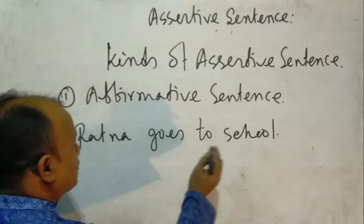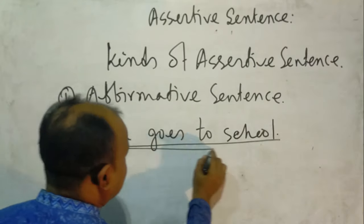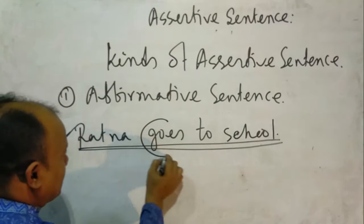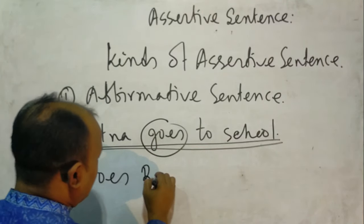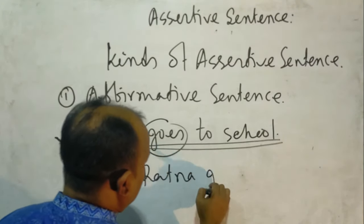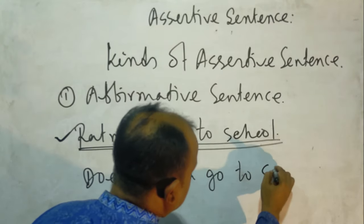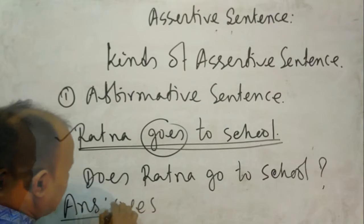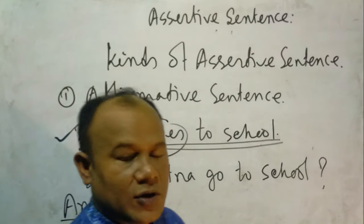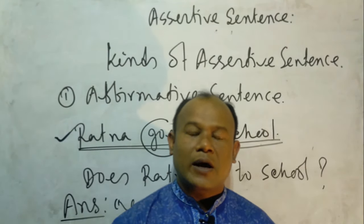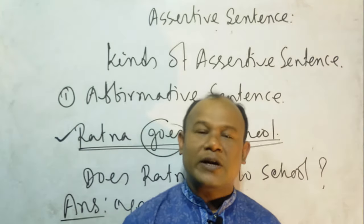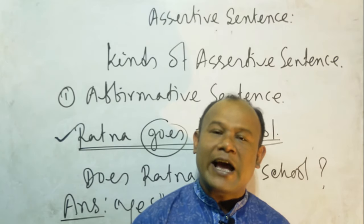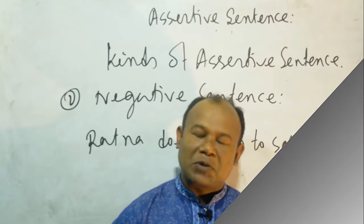Take the sentence: Ratna goes to school. If we ask a question centralizing this sentence — does Ratna go to school? — the answer will be yes. So, centralizing an assertive sentence, if we ask a question starting with a helping verb and get the answer yes, that assertive sentence is called an affirmative sentence.